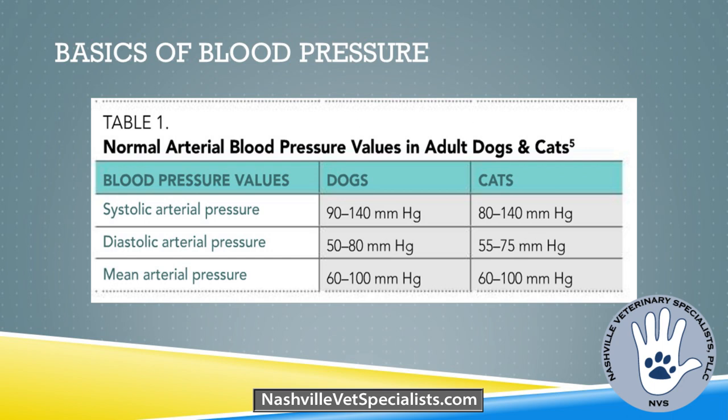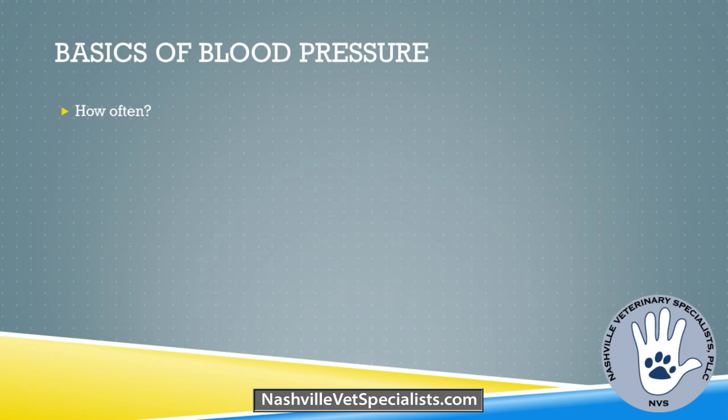Cats are always a little bit special, so they're going to be different with everything. How often are we measuring blood pressure? It's going to be different depending on the method. If you're using oscillometric or Doppler, you really want to be obtaining a measurement every three to five minutes. You want to give those arteries time to rest in between — you need to let everything reset before measuring again, so three to five minutes is a good time frame for an accurate reading.